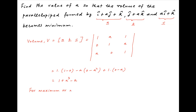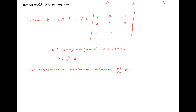Now for the volume V to be a maximum or a minimum, the derivative of V with respect to A should be 0. The derivative of V with respect to A is equal to 3A squared minus 1. Setting this equal to 0 implies that A is equal to 1 upon root 3, or A is equal to minus 1 upon root 3.